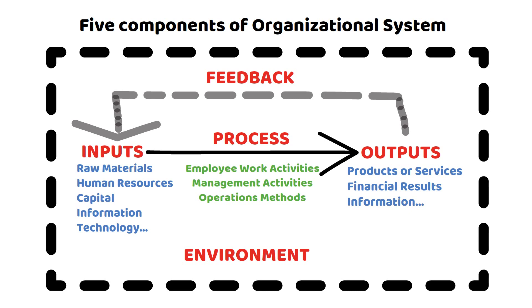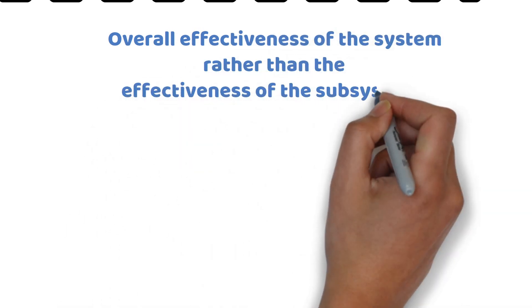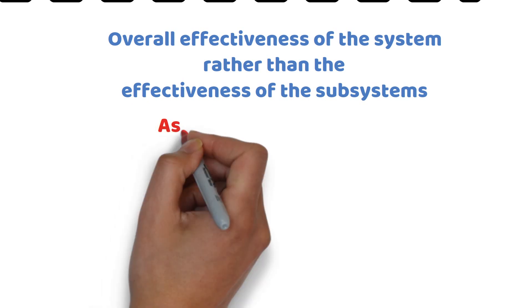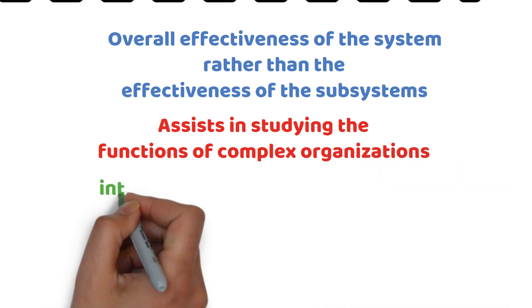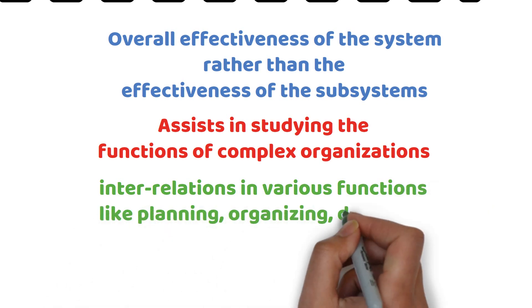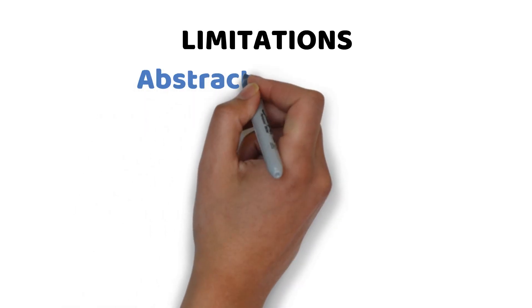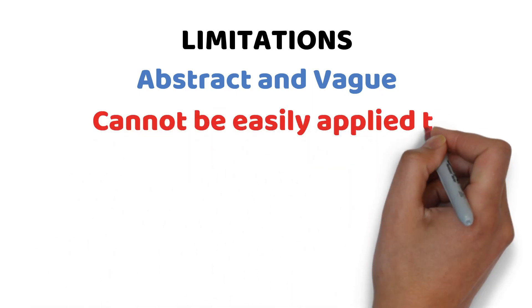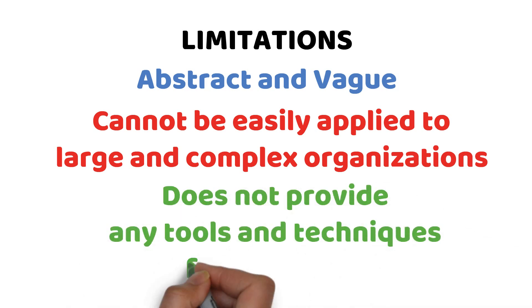In the systems approach, attention is paid towards the overall effectiveness of the system rather than the effectiveness of the subsystems. The systems approach assists in studying the functions of complex organizations, and it is possible to bring out the interrelations in various functions like planning, organizing, directing, controlling, and decision-making. This approach has an edge over the other approaches because it is very close to reality. However, there are certain limitations — it is called abstract and vague, cannot be easily applied to large and complex organizations, and does not provide any tools and techniques for managers.